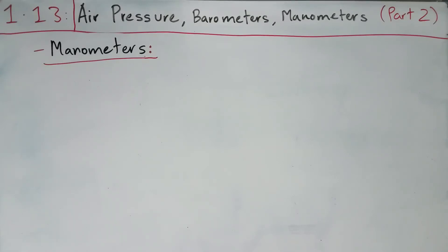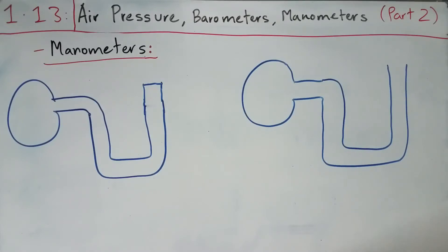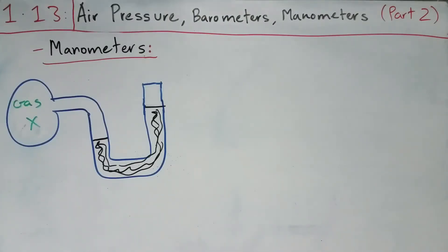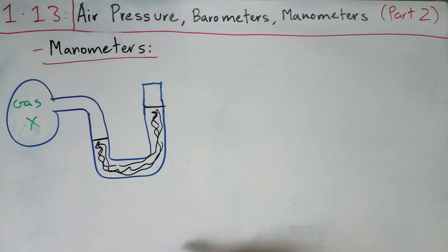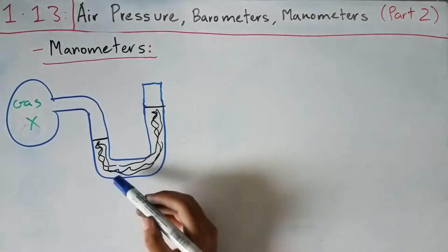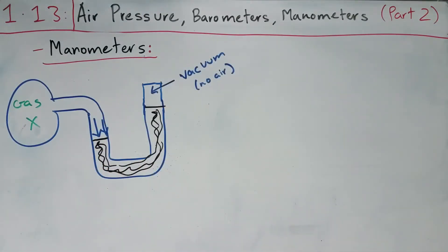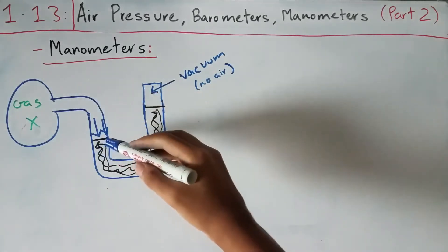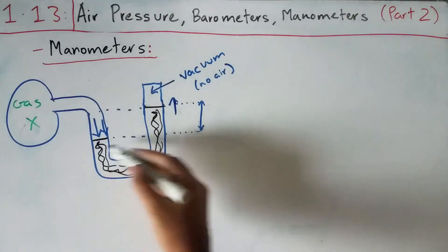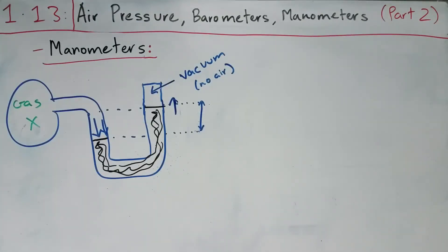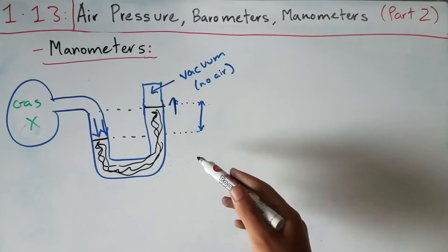Now that we know the unit millimeters of mercury, let's look at manometers. There are two types. A manometer is an instrument similar to a barometer but used to measure differences in pressure between gases. A closed-end manometer has a U-shaped glass tube with one end closed — making a vacuum — and the other end connected to a bulb containing a gas. The gas pushes down on one side, forcing mercury up the other side. The height difference gives the gas pressure in mmHg.